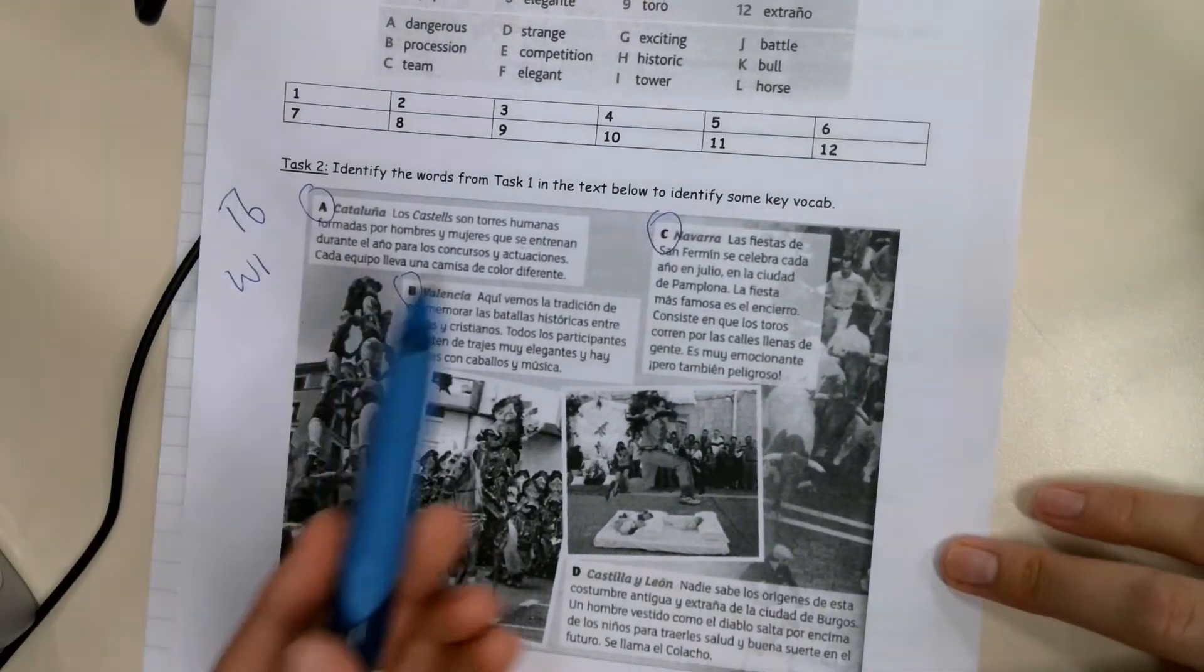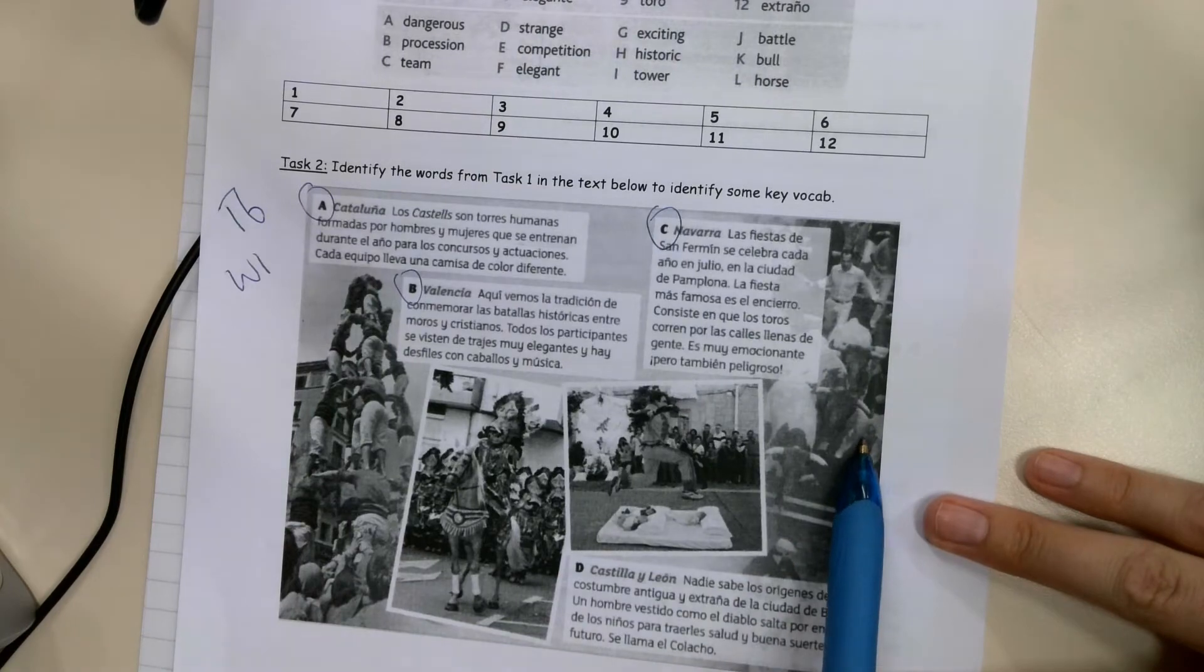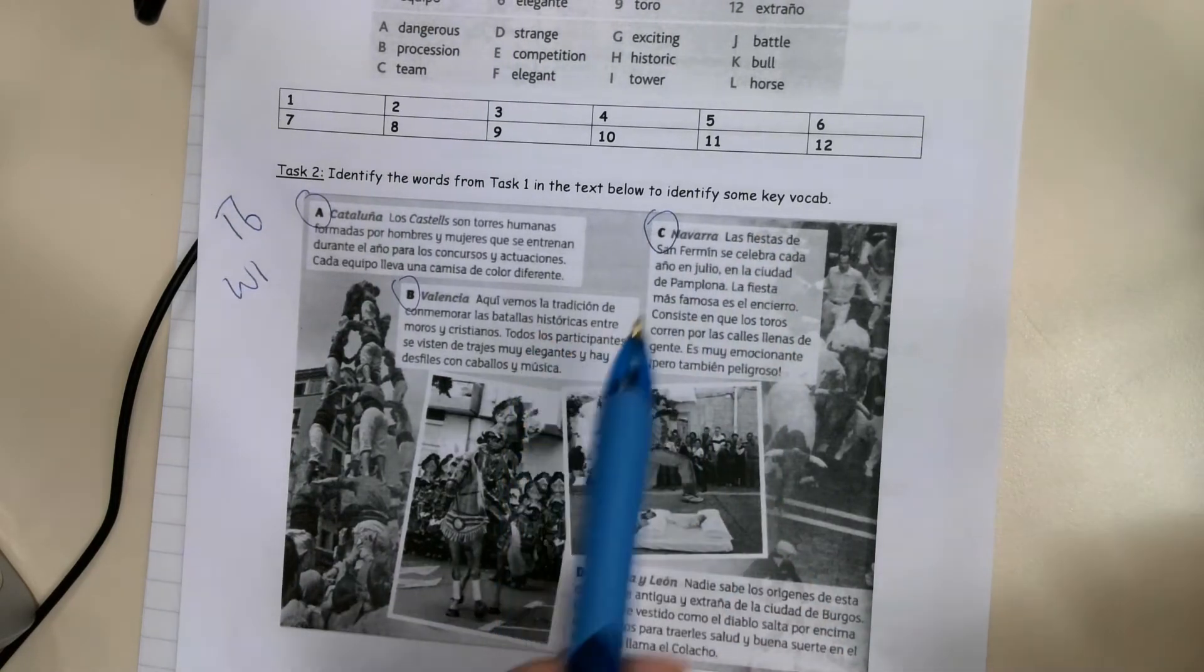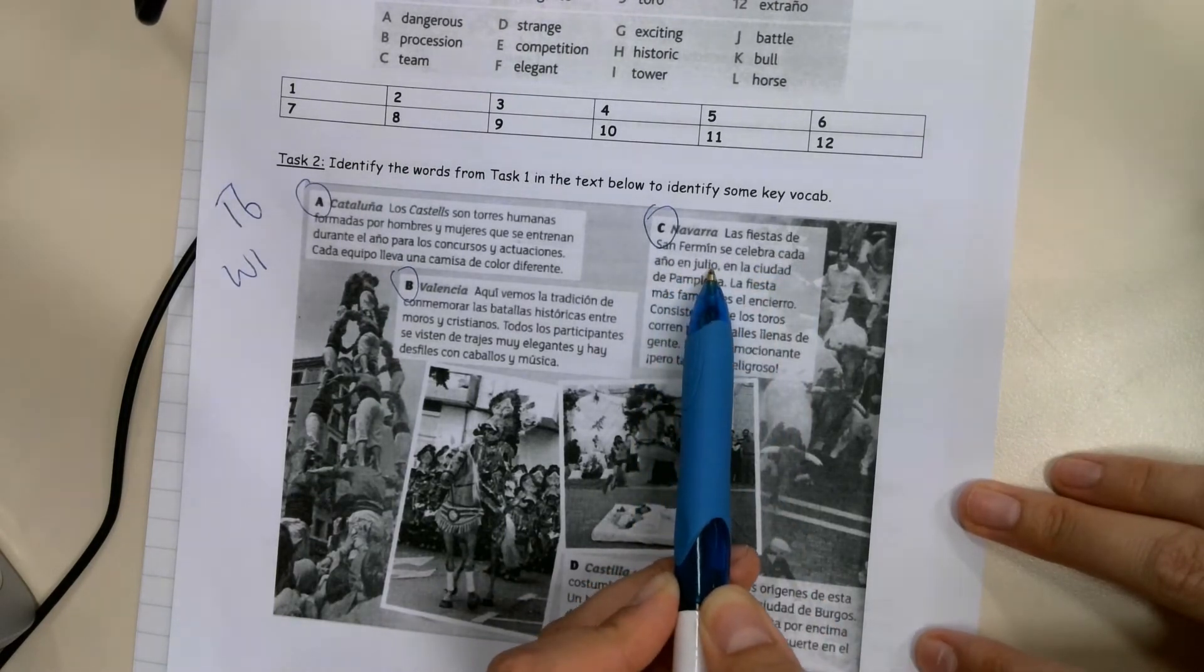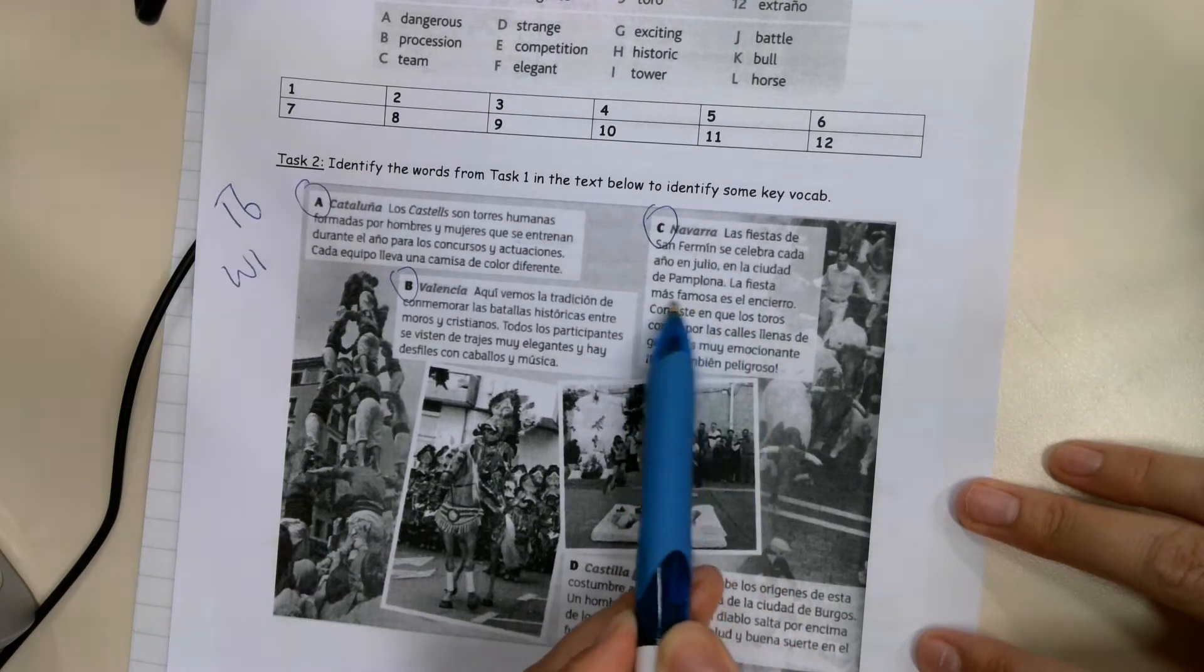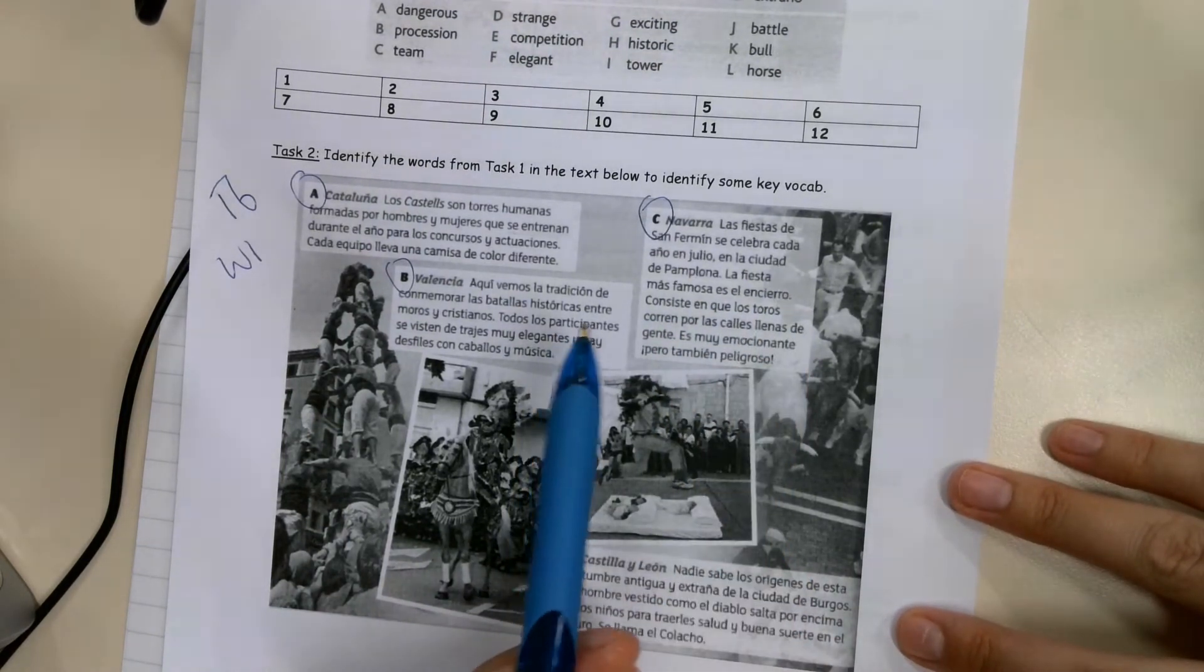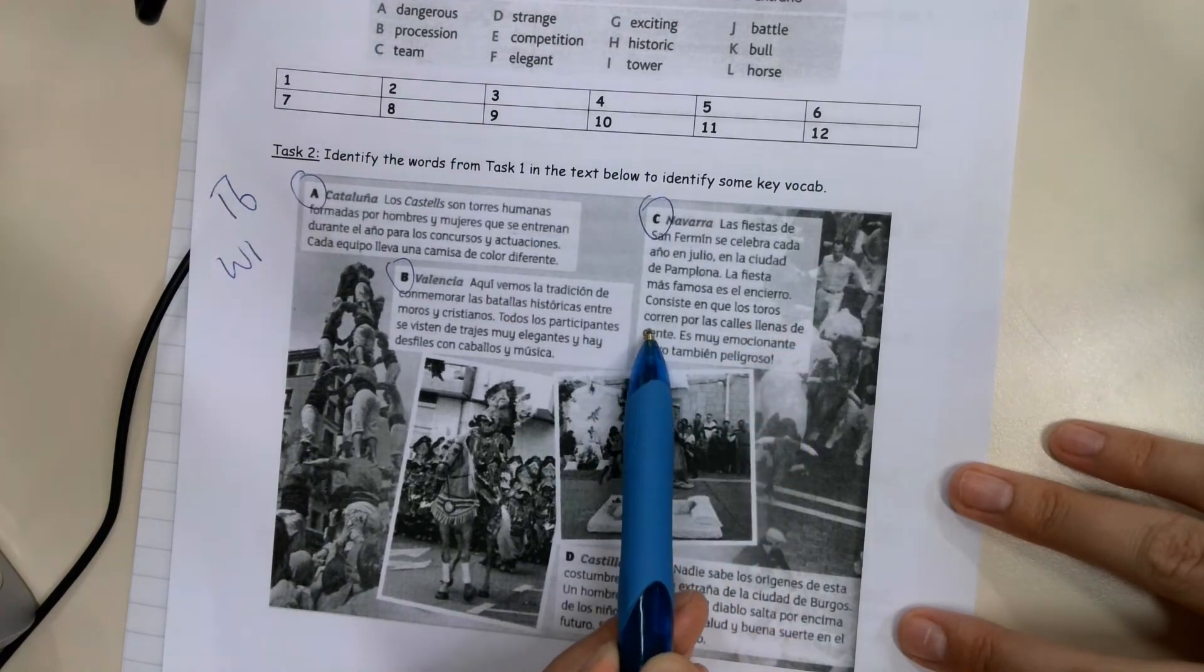So C is in Navarra, in the north of Spain. And that's this picture in the background. Las fiestas, the festivals of San Fermín, are celebrated every year in July in the city of Pamplona. The most famous festival is called El Encierro, and this is the running of the bulls. It consists of the bulls running in the streets full of people. Basically they release a bull and it chases a load of people down the street.